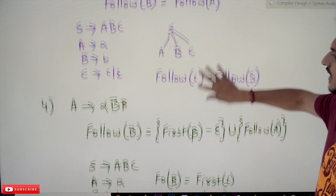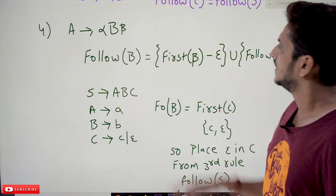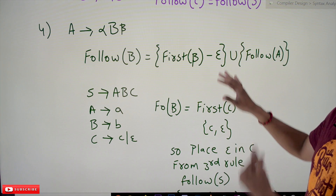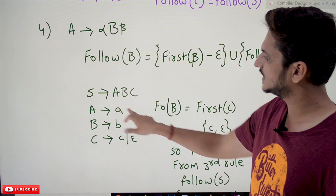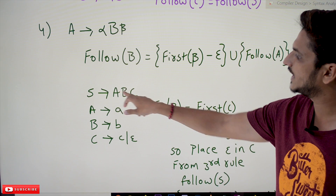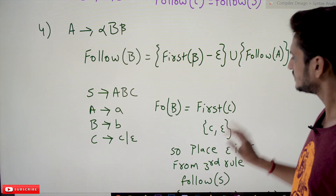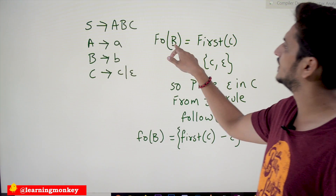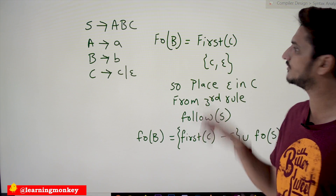The fourth condition: if a production is of the form A → αBβ, then FOLLOW(B) is based on FIRST(β). From our example S → ABC with C → c | ε, consider FOLLOW(B). Here B is followed by β = C. FOLLOW(B) starts with FIRST(C). If FIRST(C) = {c, ε}, then c is in FOLLOW(B).